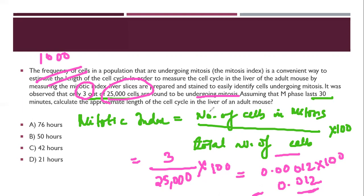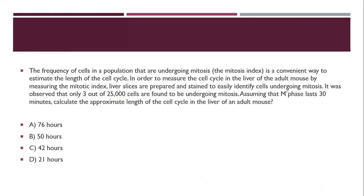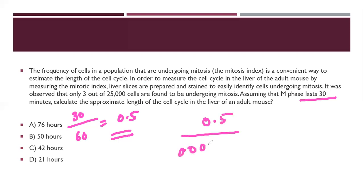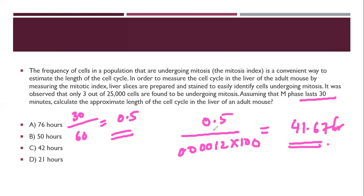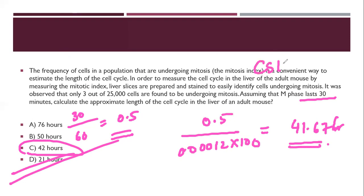Now, M phase lasts 30 minutes, which is 0.5 hours. Dividing 0.5 by the frequency (0.012) gives approximately 41.67 hours, which is close to 42 hours. So the approximate length of the cell cycle in the liver of an adult mouse is 42 hours. This is how you calculate using the mitotic index, and this type of question has appeared in the CSIR syllabus before.